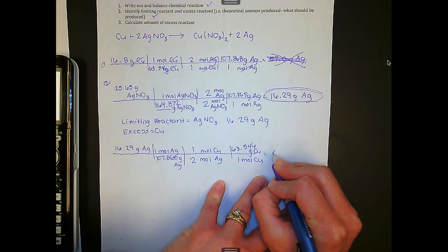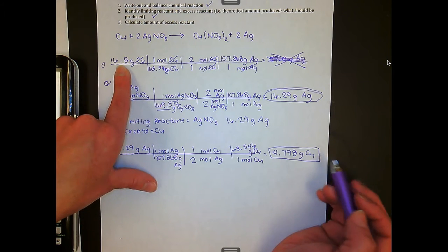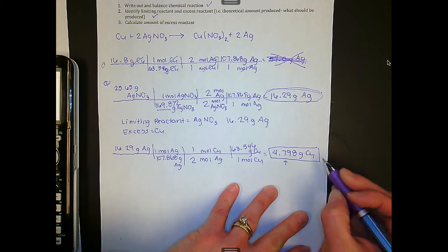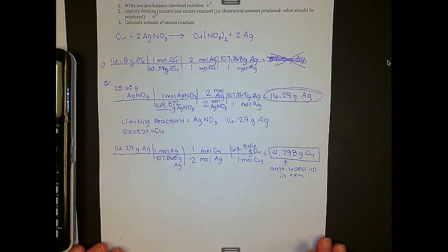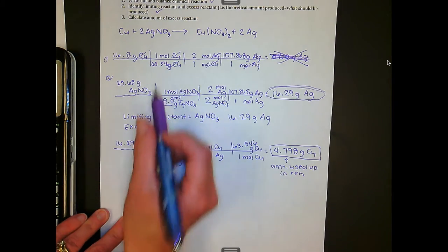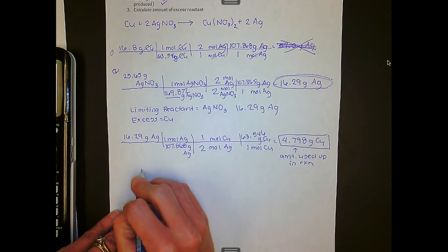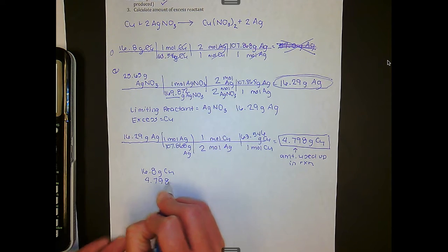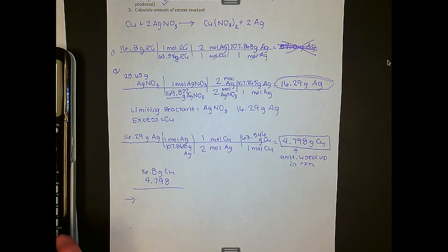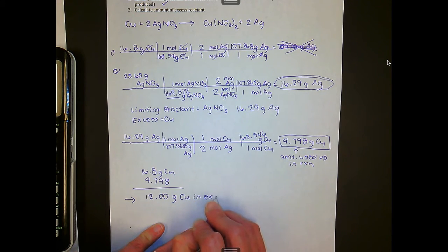The amount of copper that actually gets used is 4.798 grams of copper — which is notable given that we started with 16.8 grams. Write this in as 'amount used up in reaction.' To find how much is left over: we started with 16.8 grams of copper, subtract 4.798 grams used up, and that gives us 12.00 grams of copper in excess — that's how much we have left over.